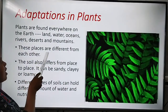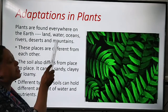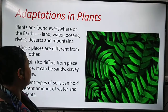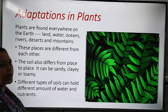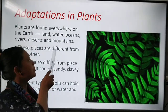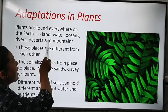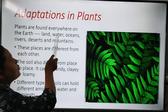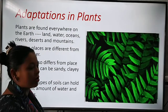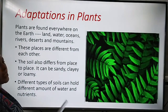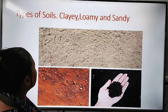These places — land, water, oceans, rivers, deserts and mountains — are different from each other. The soil also differs from place to place. It can be sandy, clayey or loamy. Soil from each of these places is also different.